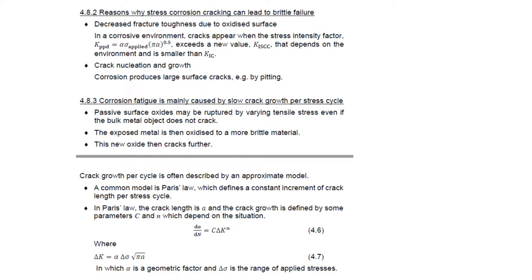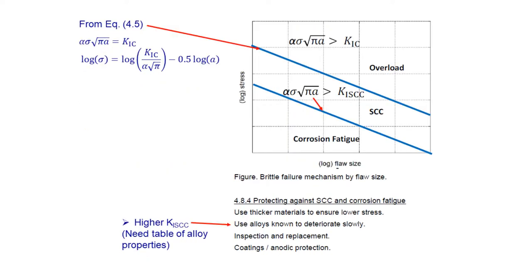On page 10, a log-log diagram shows stress against flaw size with regions for different failure mechanisms. At high stress there is straightforward overload — predictable from mechanical engineering without corrosion science. In an intermediate region, stress corrosion cracking occurs where decreased fracture toughness and possibly enlarged crack size from pitting are relevant. At lower stresses, corrosion fatigue is a risk, but only when there is a varying applied tensile stress.